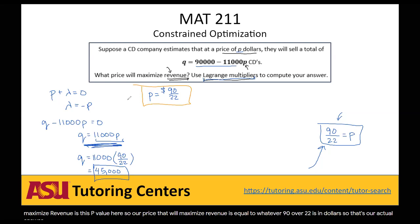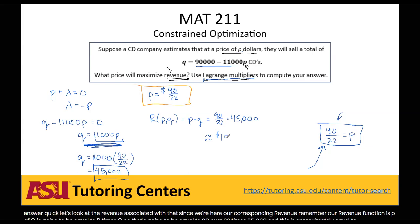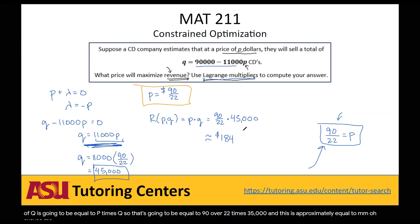Let's also look at the revenue associated with that price. Our revenue function R equals P times Q equals 90/22 times 45,000, which is approximately equal to $184,090.91. Note that we rounded this to the nearest cent.